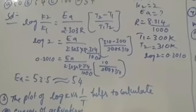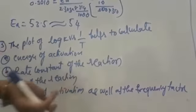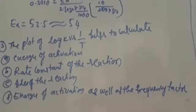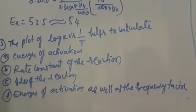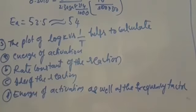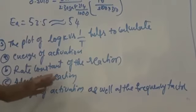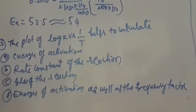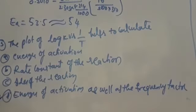Next, the plot of log K versus 1 by T helps to calculate activation energy and also the frequency factor, which is called the Arrhenius factor. The graph gives both energy of activation as well as frequency factor.